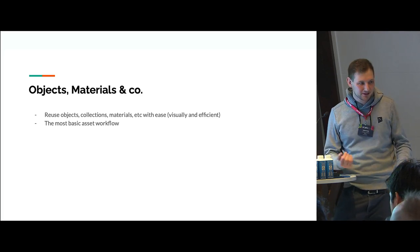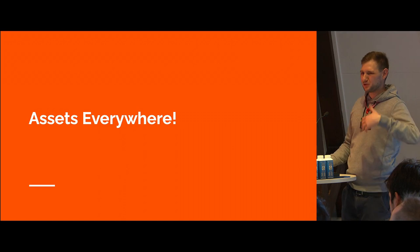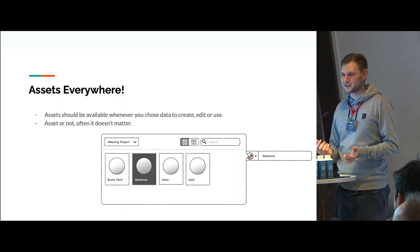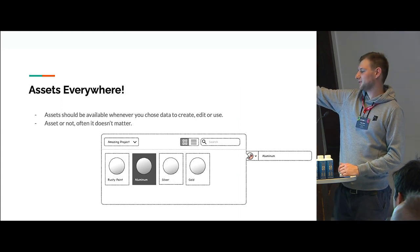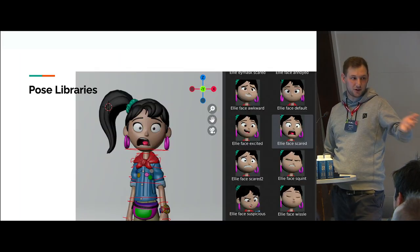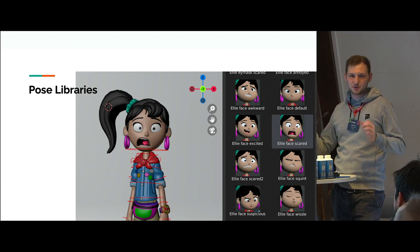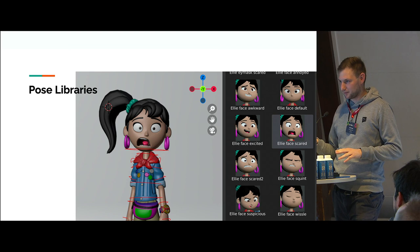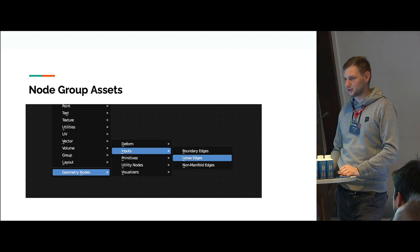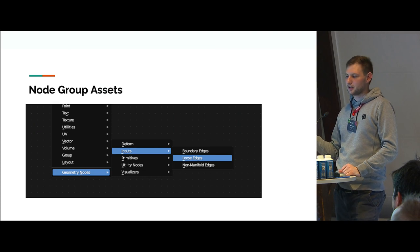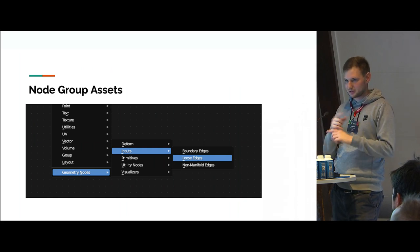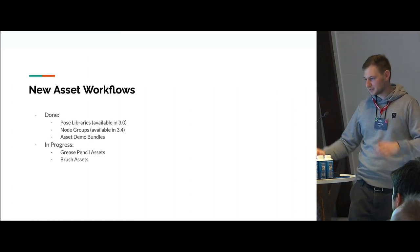The basic workflow is using objects and materials — that's the very basic thing, and it should really work. But we want to go beyond that: assets should be everywhere in the UI. It shouldn't matter anymore whether you're using local data — you can just use assets that are available to you, for example in the material selector alongside other materials. We already talked about pose libraries — animators in the Blender Studio use them all the time. In 3.4 there are going to be node group assets and they'll appear in the Shift-A add menu. Assets should be everywhere.